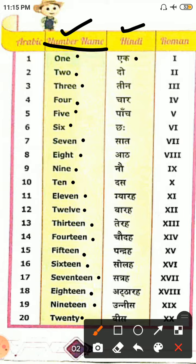Two hai, two ko aap bolenge do. Three, teen. Four, chaar. Five, paanch. Six, chheh. Seven, saat. Eight, aath. Nine, nau. Ten, das.